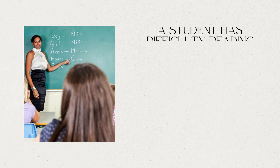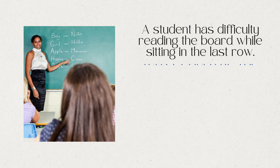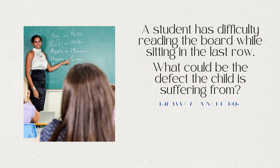Question 4: A student has difficulty reading the blackboard while sitting in the last row. What could be the defect the child is suffering from, and how can it be corrected?